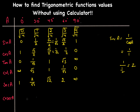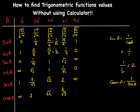For cosecant, it equals 1 over sine, so just flip the sine values. csc(0°) = 1/0 = infinity, csc(30°) = 2, csc(45°) = √2 (the middle term stays), csc(60°) = 2/√3, and csc(90°) = 1.